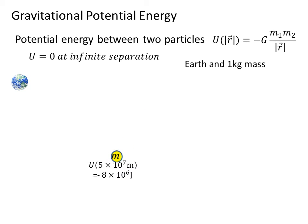We can move anywhere along a circular path, or by any path, to another point where we are still five times ten to the seventh meters away from the Earth and still have a potential energy of minus eight times ten to the sixth joules. Potential energy does not depend on the path taken to get to that point.